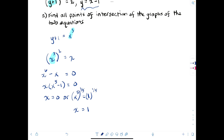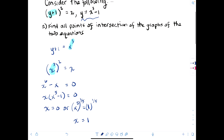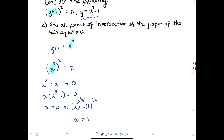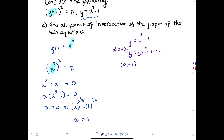So x is 0 or x is 1. Let's find all points of intersection. I'll use the equation y equals x cubed minus 1 to find the values for y. At x equals 0, y equals 0 cubed minus 1, which is negative 1, giving the ordered pair (0, -1). At x equals 1, y equals 1 cubed minus 1, which is 0, giving the ordered pair (1, 0).